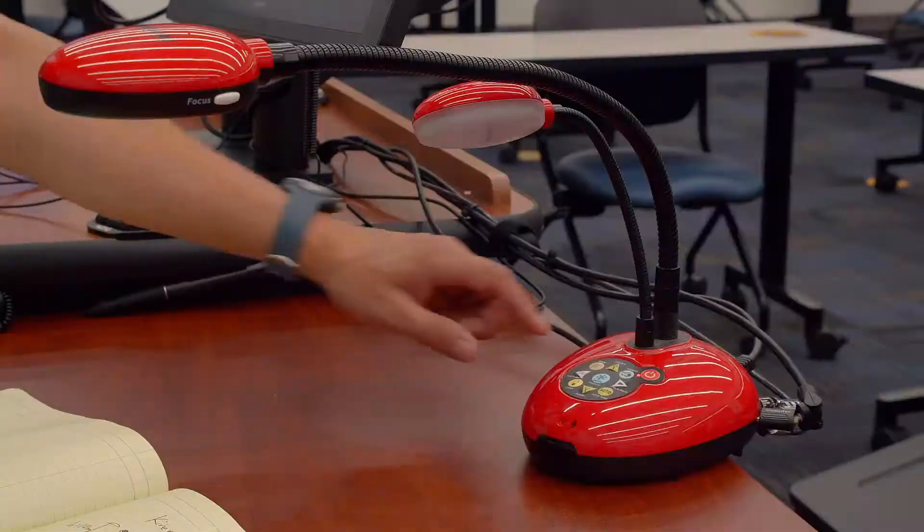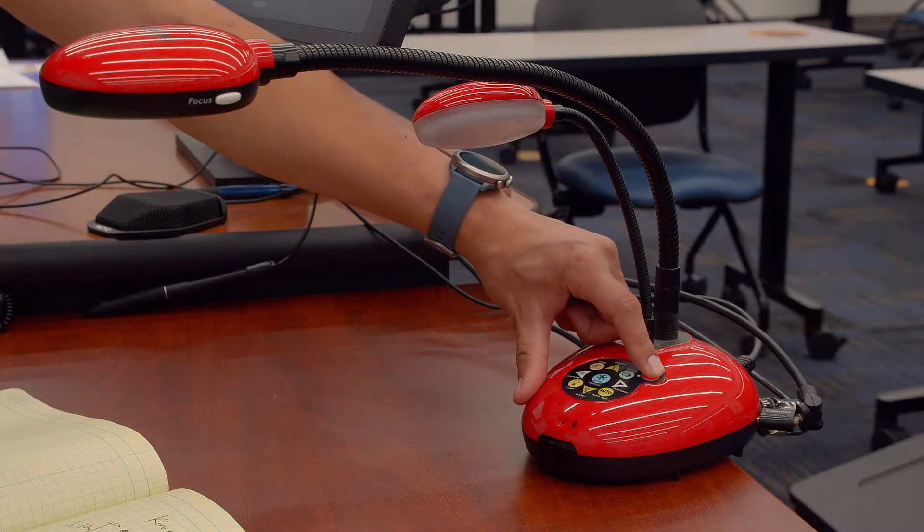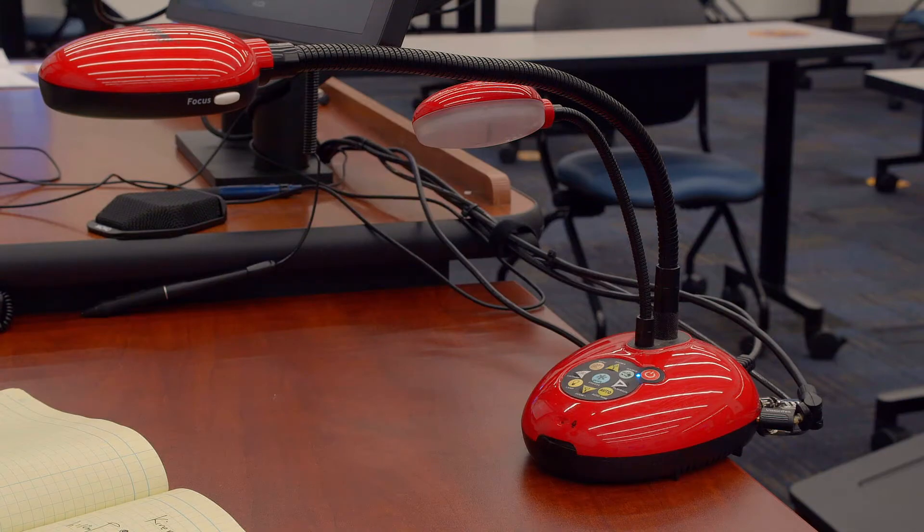So to begin, the first step is to power on the document camera by holding down the power button until the light turns blue.